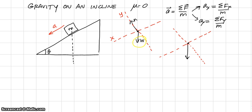If you look closely, you can see that we have a right triangle, with theta in the bottom left-hand corner and 90 degrees in the bottom right-hand corner. Up at the top, since angles inside a triangle must add up to 180, theta plus 90 gives us 90 minus theta in the upper corner.